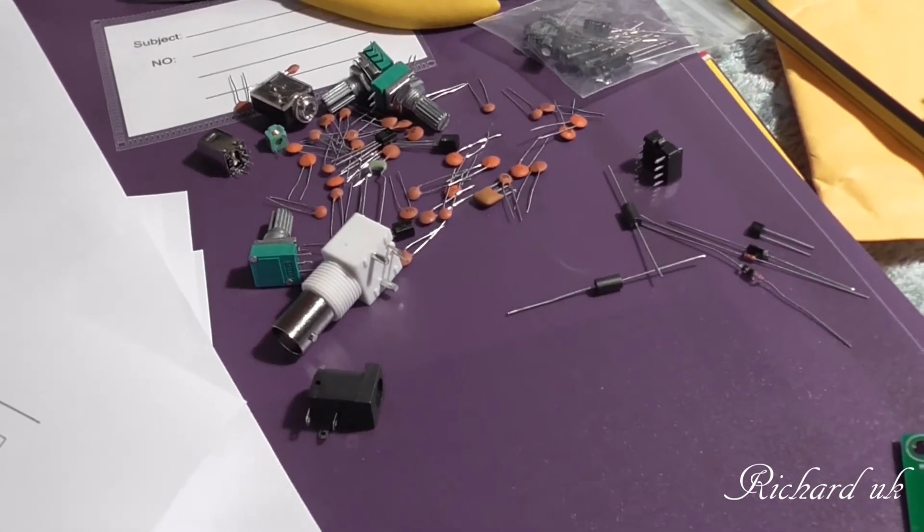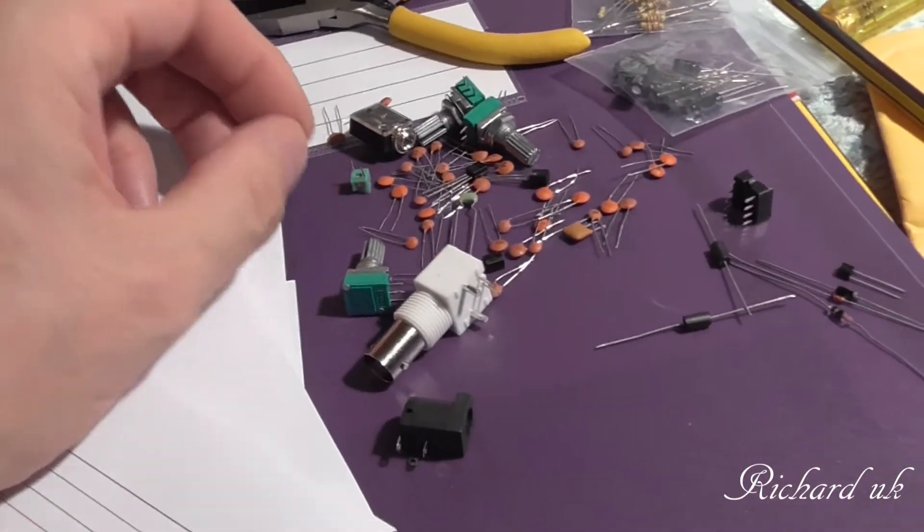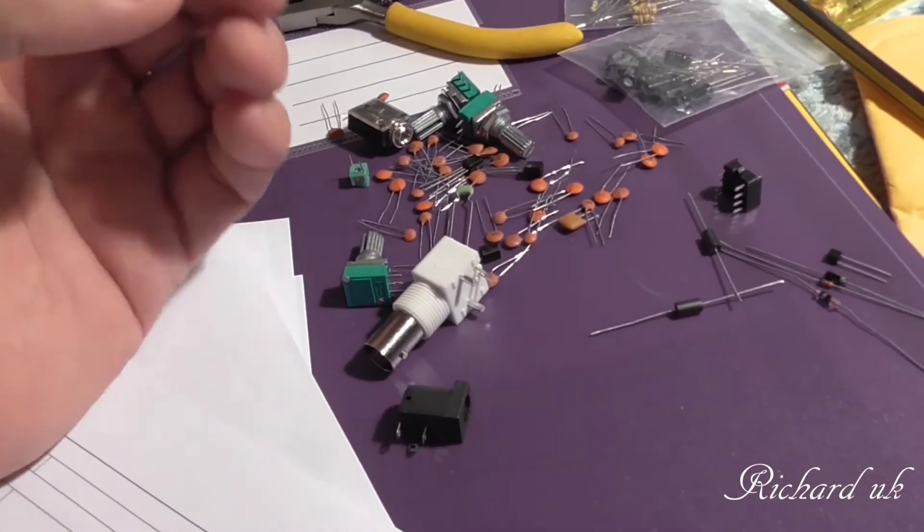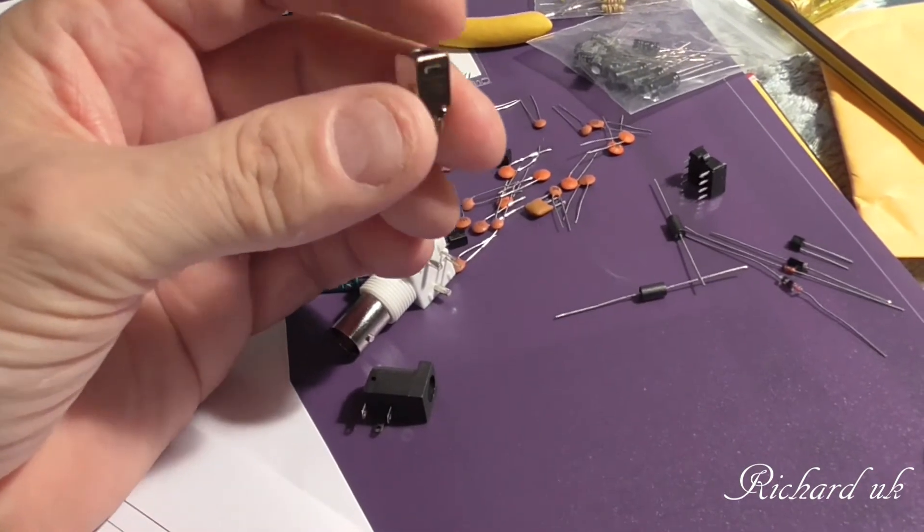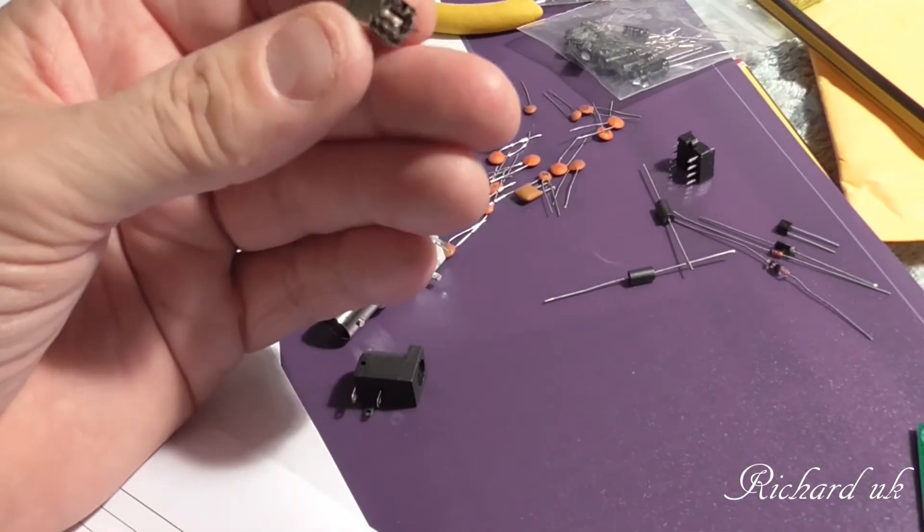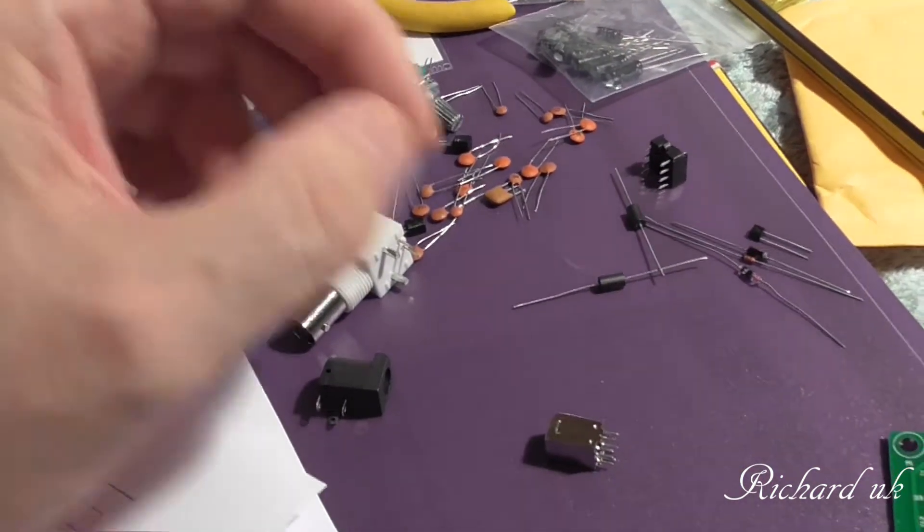So please, please avoid like the plague. Now the only thing I didn't test in this kit was the coils. There's two coils. That's one there. Some kind of IF can. Not tested that. And here's a smaller one.